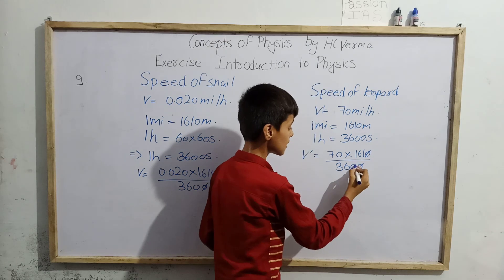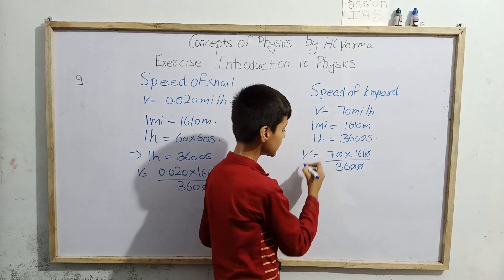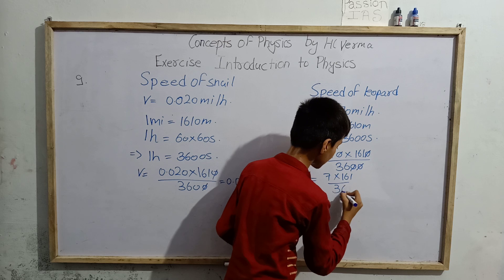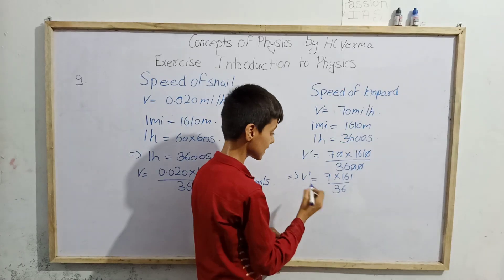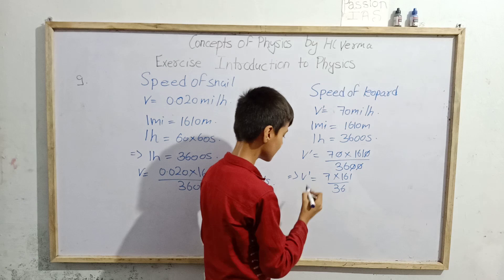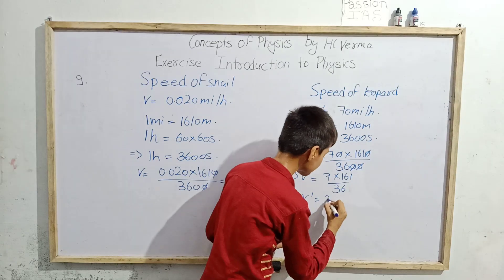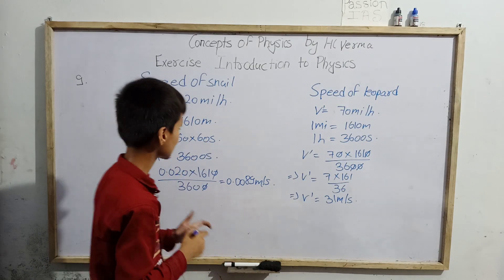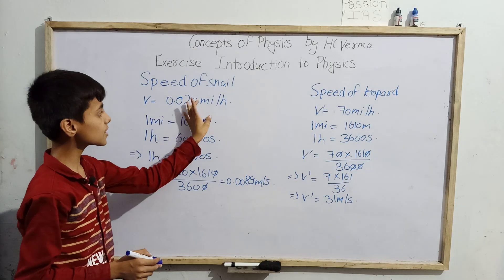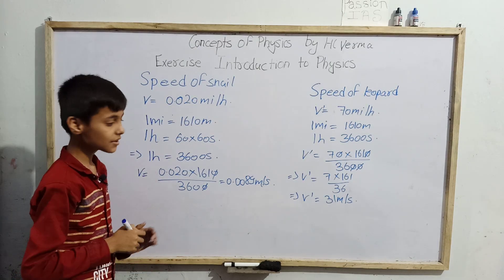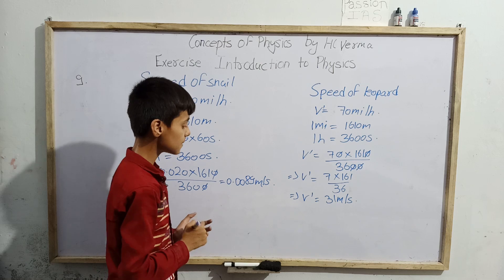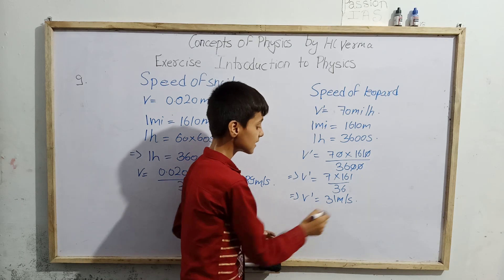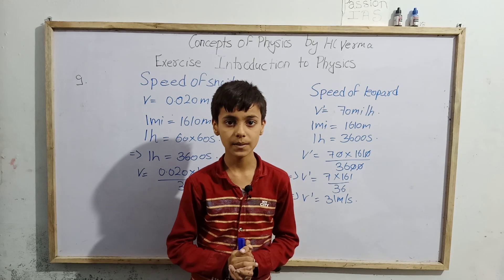Cancelling the common factor of 10, we get v dash equals 7 into 161 divided by 36, which is nearly equal to 31 meters per second. So the speed of the snail — 0.020 miles per hour — converts to 0.0089 meters per second, and the speed of the leopard — 70 miles per hour — converts to 31 meters per second. Thank you.